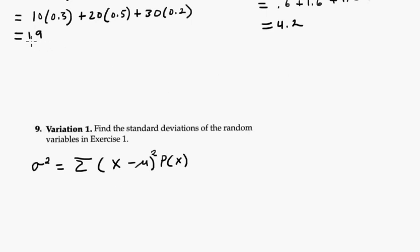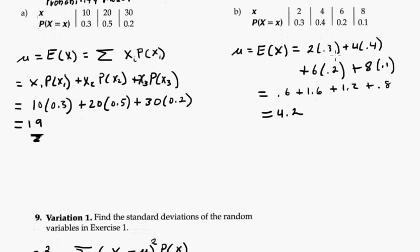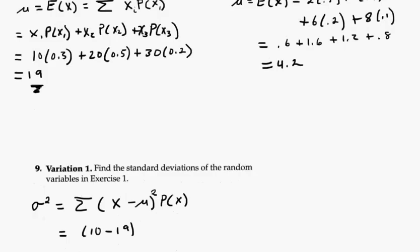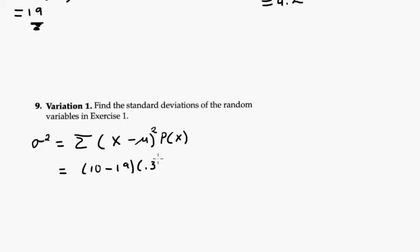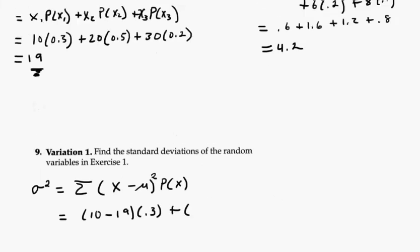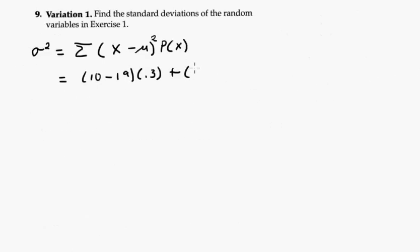So we know that mu is 19. So we're going to have 10 minus 19 times the probability, which is 0.3. So 10 minus mu times 0.3. And then plus, what's the next one? 20. So 20 minus 19 times 0.5. And then plus 30 minus 19, and we got to square it, times 0.2.